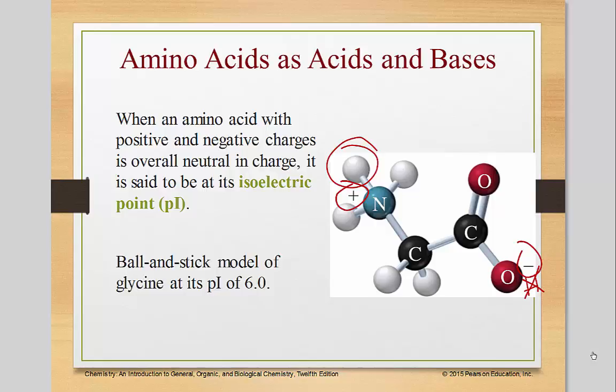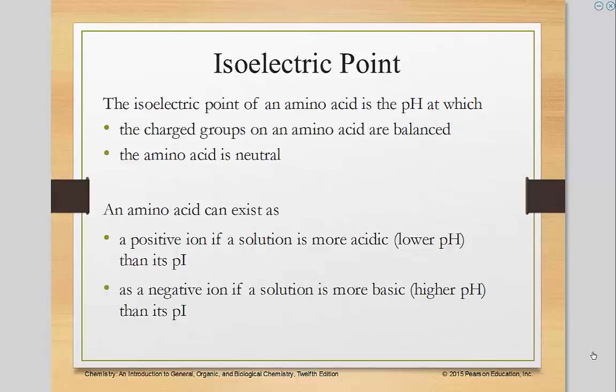And that's called the isoelectric point when those two points are neutral. The isoelectric point of an amino acid is the pH at which the charged groups of an amino acid are balanced. That positive and negative are balanced. And therefore, the amino acid is neutral. An amino acid can exist as a positive ion if it's more acidic and a negative ion if it's more basic.